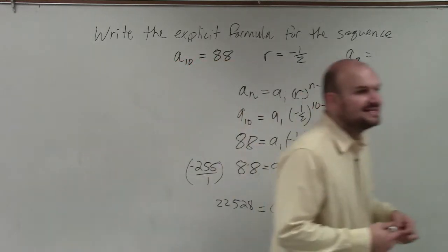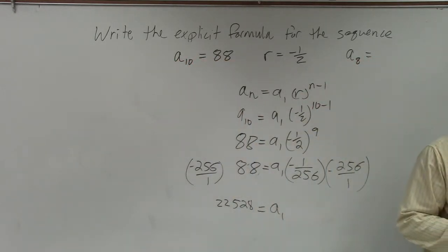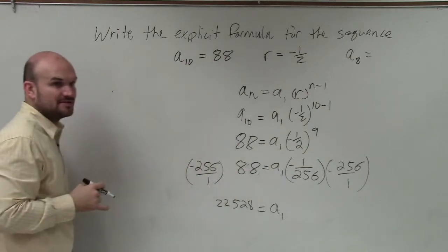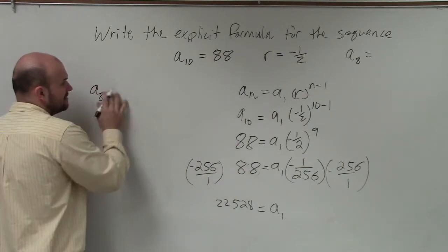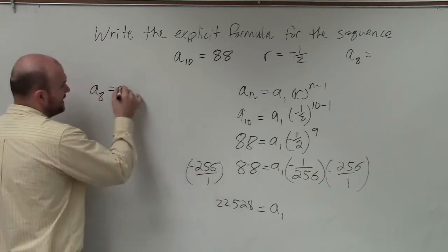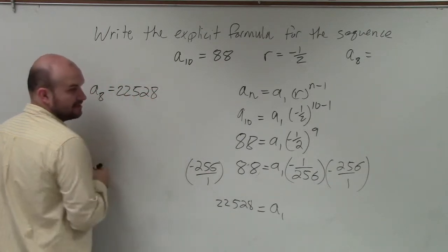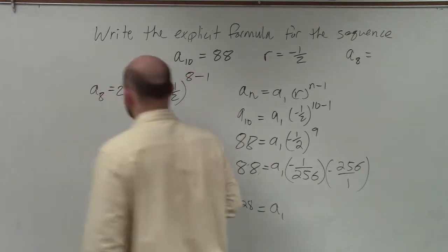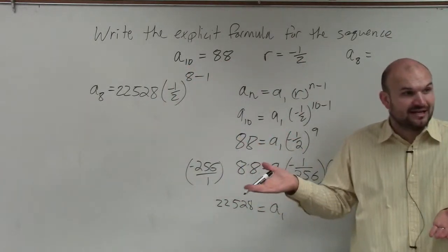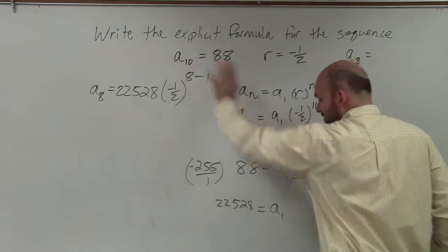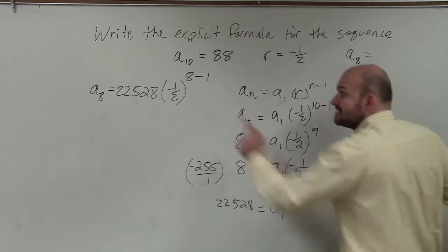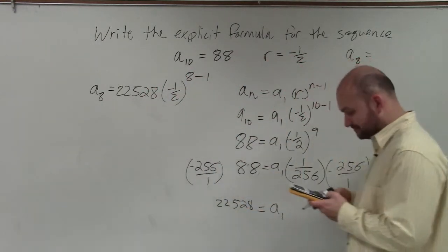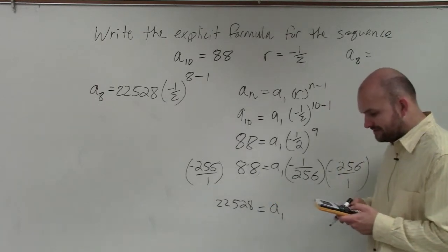Now, the reason why identifying a_sub_1 can be important is because now I can go back to my formula. I want to figure out what the 8th term is, right? So a_sub_8 equals — I now know what a_sub_1 is, which is 22,528, times my ratio, which is negative one-half, raised to the 8 minus 1. Do you guys see how now I have all the information I needed? I just plugged in what I had to find a_sub_1. Once I know a_sub_1, I can plug it back into my formula. So now this basically becomes 2 raised to the 7th, so it's 128.